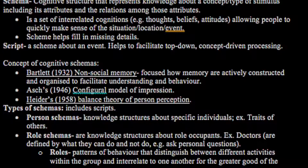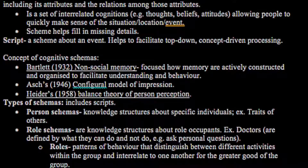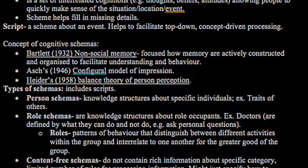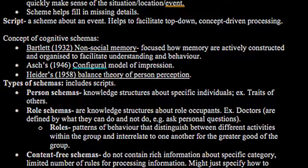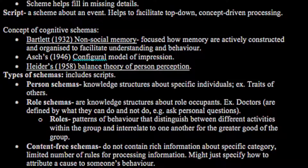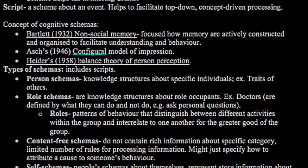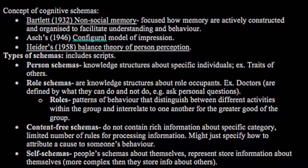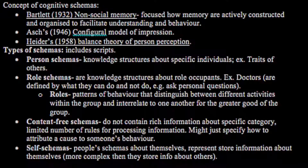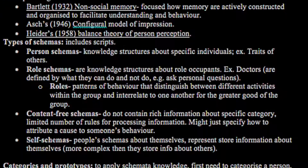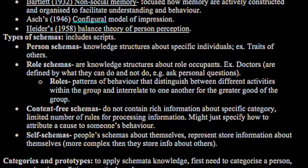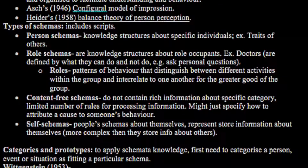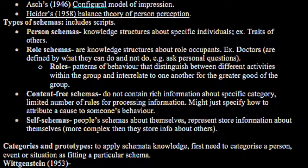There are types of schemas. Scripts, as previously stated. Person schemas are knowledge structures about specific individuals, for example traits of others. Role schemas are knowledge structures about role occupants — for example, doctors are defined by what they can and cannot do, such as asking personal questions. Roles are patterns of behaviour that distinguish different activities within a group and interrelate them for the greater good of the group. Content-free schemas do not contain rich information about specific categories and have a limited number of rules for processing information — they might just specify how to attribute a cause to someone's behaviour.